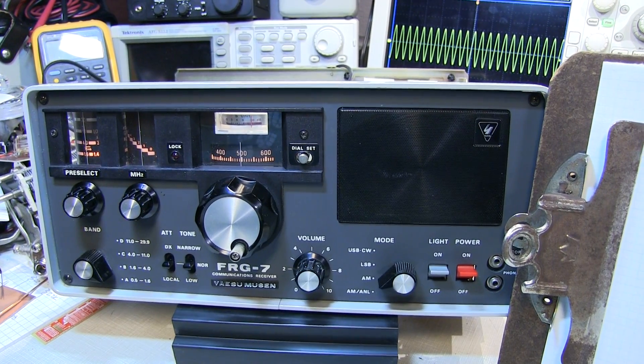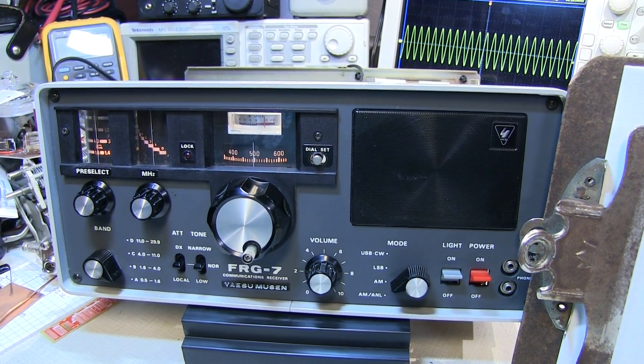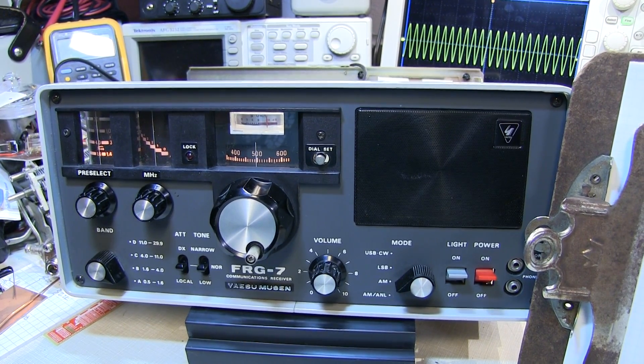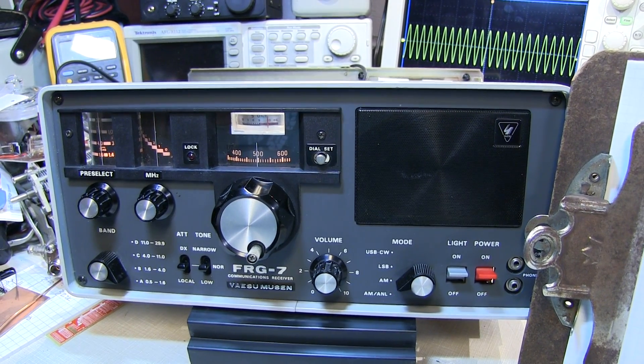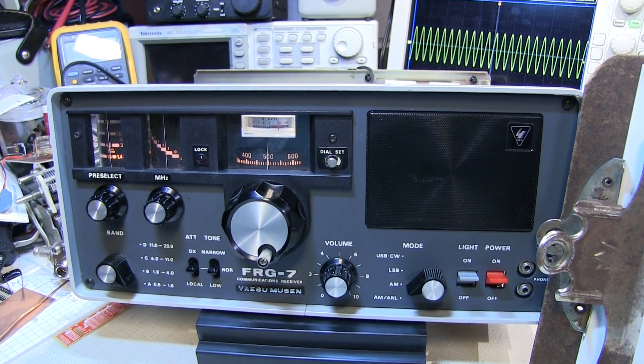The Wadley Loop is a super heterodyne architecture that is drift-canceling, and that's what makes it unique. Back in the days before synthesized variable frequency oscillators, or VFOs, drift in the first LO of a receiver was a big concern.